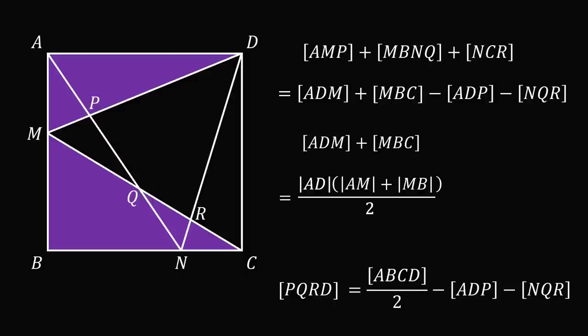But AM plus MB is exactly equal to the length of AB. So the sum of the areas of these two triangles is equal to AD multiplied by AB all over 2. But AD multiplied by AB is equal to the area of the square ABCD. So the sum of the areas of these two triangles is exactly equal to half the area of the square.